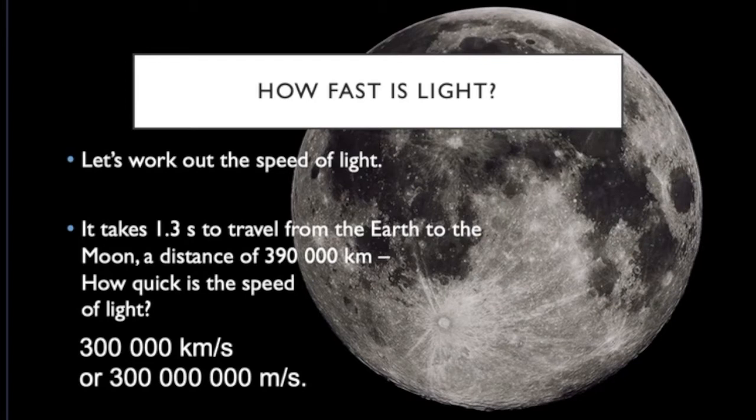So we know that speed equals distance divided by time. So we can work out that the speed of light is about 300,000 kilometers per second or 300 million meters per second.